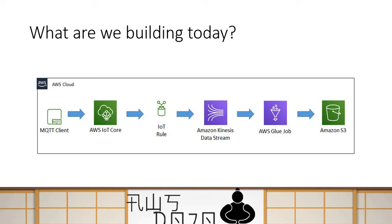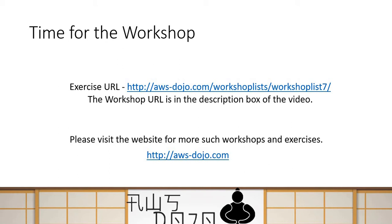This is the scenario we are going to build today as part of the workshop. The URL of the workshop has been provided in the description below. If you click on that URL, you will find a step-by-step process to configure AWS services and implement the whole scenario end to end. Feel free to use the link and run this workshop on your own time to learn how Glue, Kinesis Data Stream, and IoT can work together for streaming data processing.